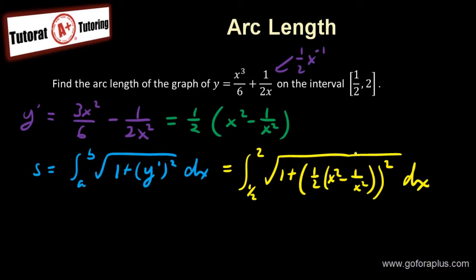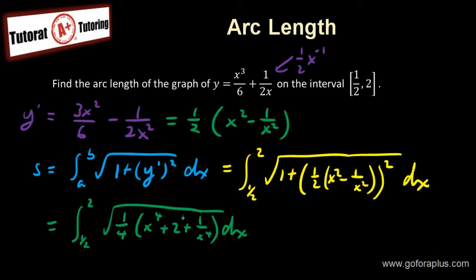Now to simplify this a little bit, I need to multiply out this bracket here. So what does this give us? This is going to be 1 half to 2 square root of 1 quarter x to the 4 plus 2 plus 1 over x to the 4 dx. So this is what I simplified after I multiply out the bracket here and with the plus 1 in front.